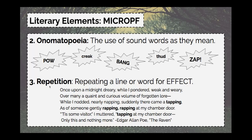Repetition is pretty easy to remember. Sometimes when we're reading, an author might repeat a line or a word for effect. If we're watching a movie or reading a story and they keep mentioning, 'nobody is supposed to go in the basement,' 'stay away from the basement,' 'don't go in the basement after dark' — they keep repeating the word basement. That kind of lets us know as the reader that something's going on and something's going to happen with this basement.